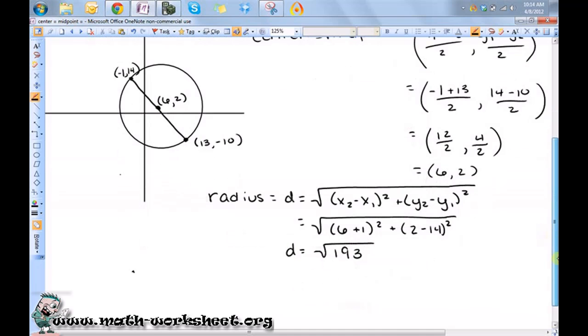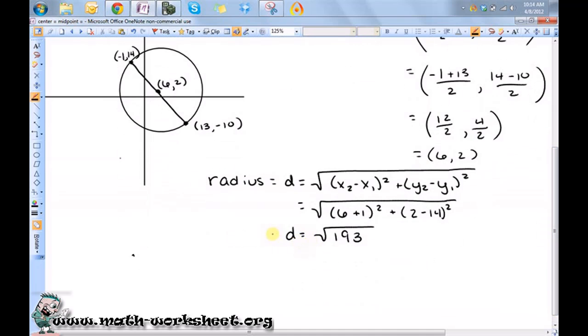Now you might be tempted to try to round that, okay, but it is best to leave it in square root form because when we put it into the standard form of the equation of the circle, we're just going to end up squaring it, so it will be best to leave it in this form.